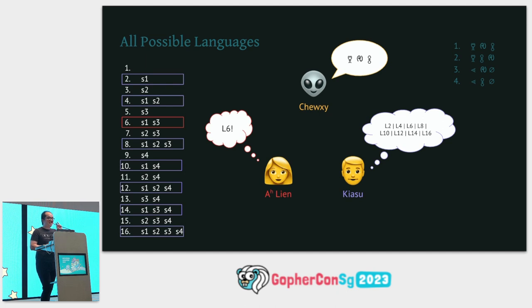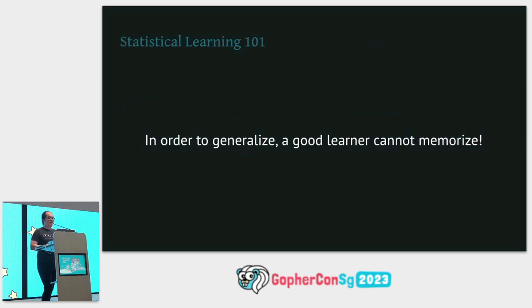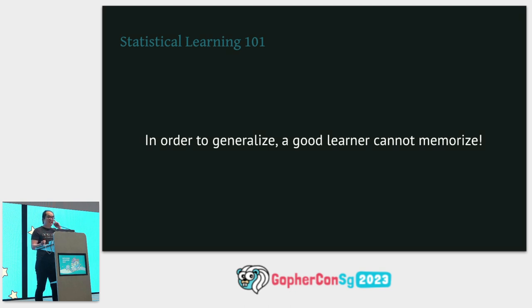This example seems a bit contrived, but it underlies statistical learning. In order to generalize, a statistical learning algorithm cannot memorize. If you're into statistical learning, you might have heard of this concept referred to as VC dimension — you can think of VC dimension as the measure of complexity of the dataset. The key to statistical learning is that a dataset can only be learned if it has a finite VC dimension.